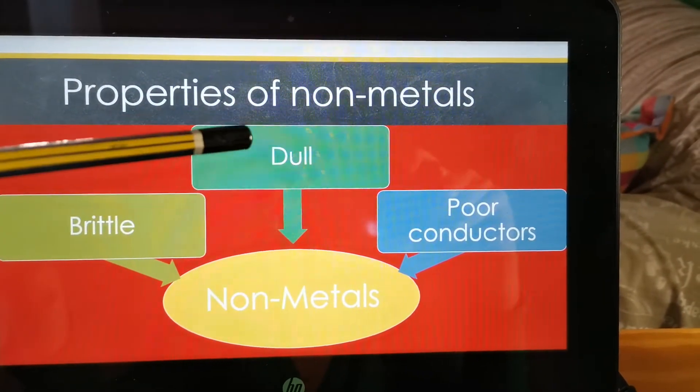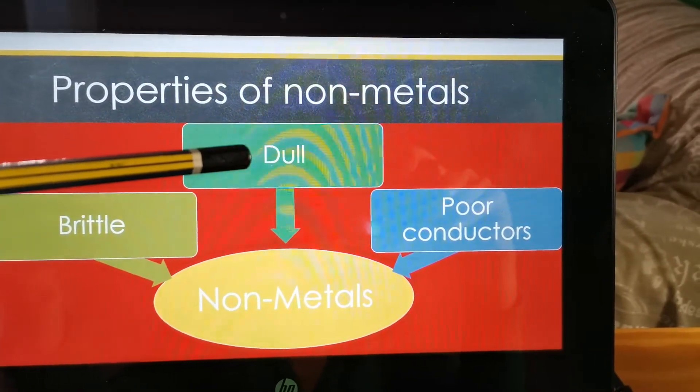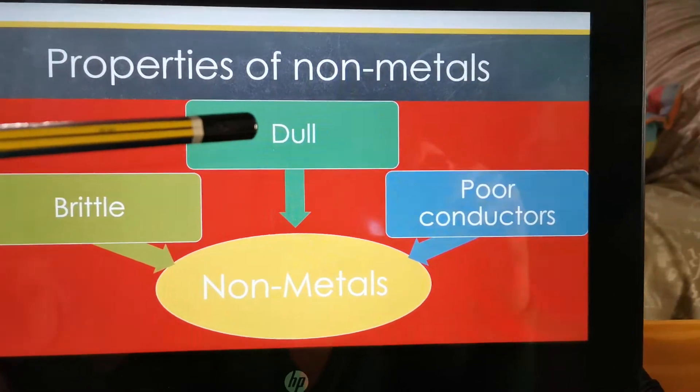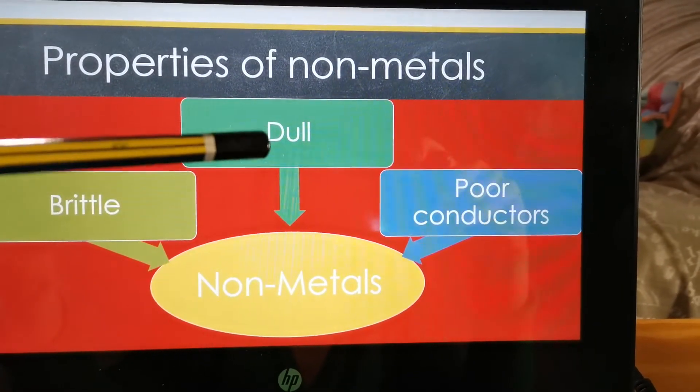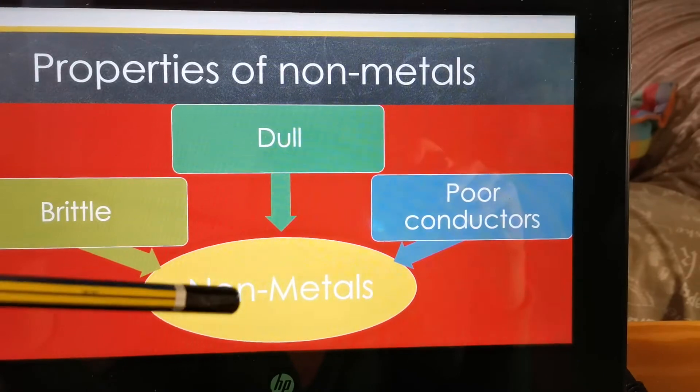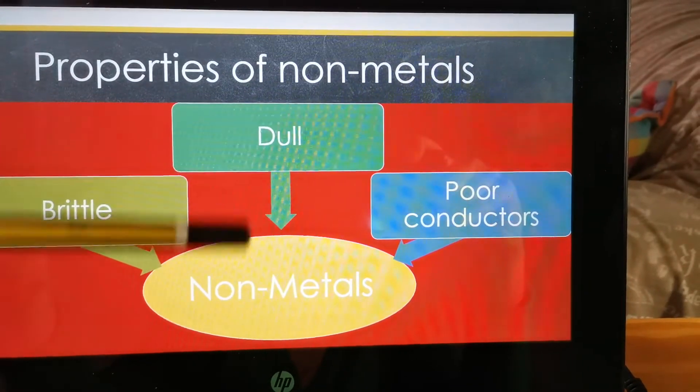And then we have non-metals. They are dull. And what is a metal again? A metal is shiny. So, again, opposites. Non-metals, dull. Metals, shiny.